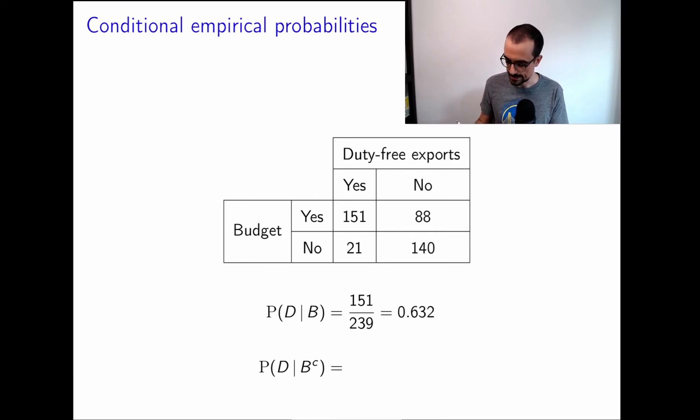We can also condition on B complement, which is this. And now we're interested in D, conditioned on B complement, that's going to be 21 divided by 161. So it's much, much lower. If we know that someone has voted no on the budget, then we can be pretty sure that they're going to vote no on duty-free exports. And again, this relationship is revealed by the empirical conditional probabilities.